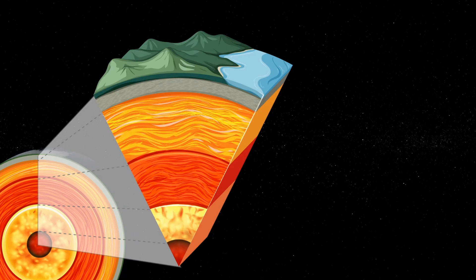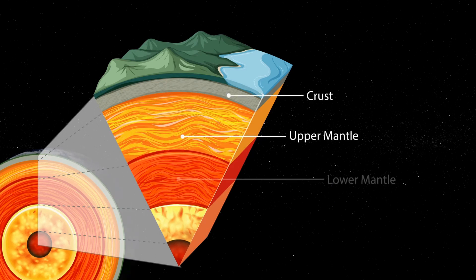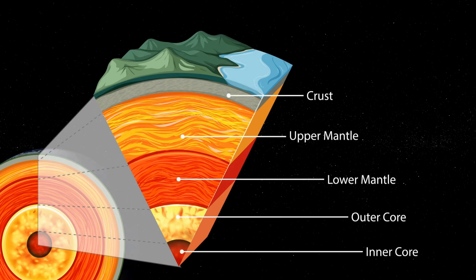Broadly speaking, the Earth can be divided into five main layers, from shallowest to deepest. These are the crust, the upper mantle, the lower mantle, the outer core and the inner core.